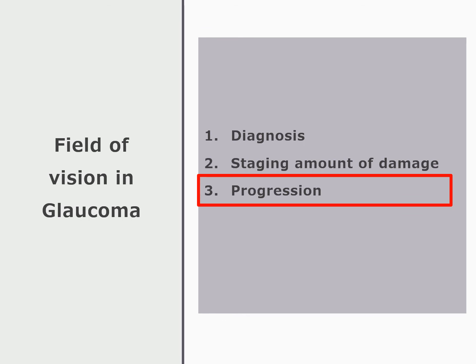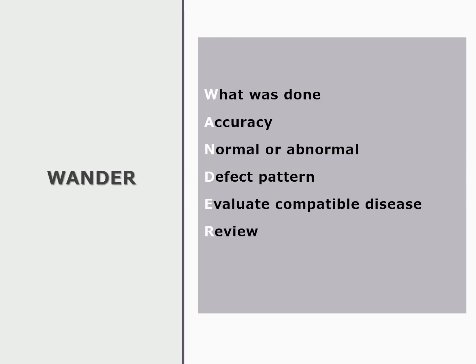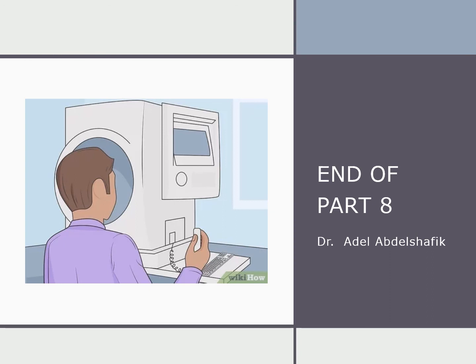The visual field also helps in detecting progression, which is covered in another presentation. Returning to the WONDER acronym: we started with whether accuracy is normal or abnormal, then the defect patterns, and lastly the E stands for evaluating compatible diseases — whether the finding suggests something in the retina, the nerve, the central pathway, or glaucoma — and then reviewing the literature for better updated information. Thank you for keeping to the end of this presentation.